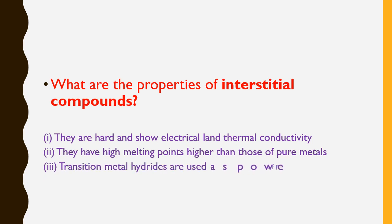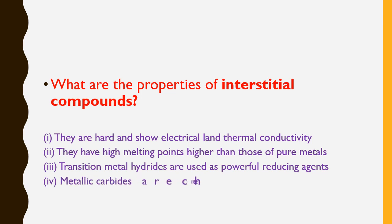Transition metal hydrates are used as powerful reducing agents. Metal carbides are chemically inert.